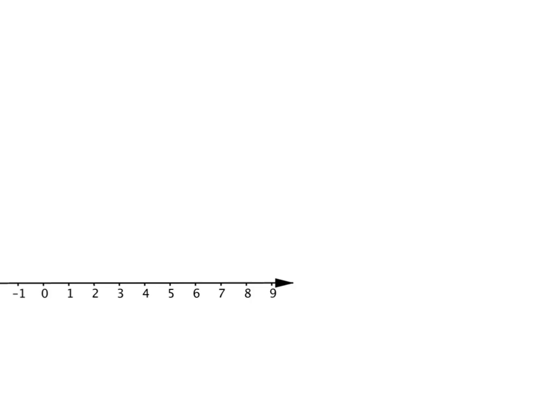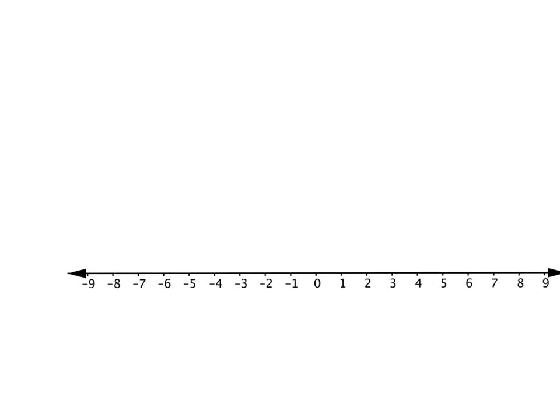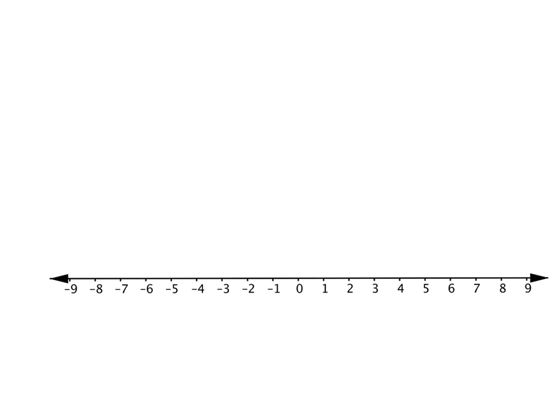You're very used to dealing with a number line that starts at 0 and goes on up from there. As you move that way, your numbers get bigger and bigger, and as you move to the left, the numbers get smaller and smaller. Now we can take exactly those ideas and extend our number line to include negative numbers, and everything will work just the same. As we move in this direction, our numbers are getting bigger, and as we move to the left, our numbers are getting smaller.